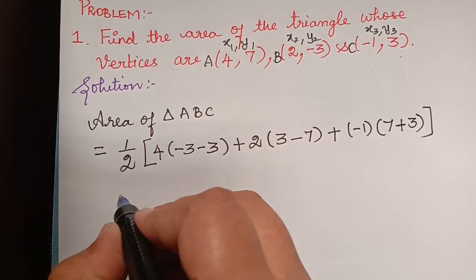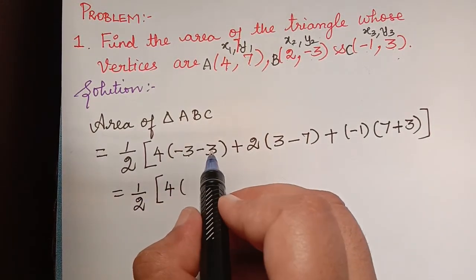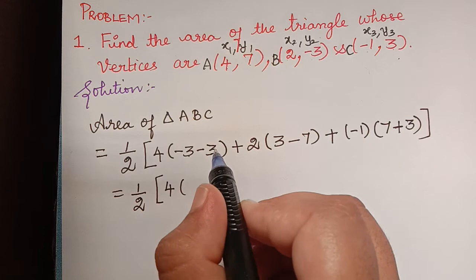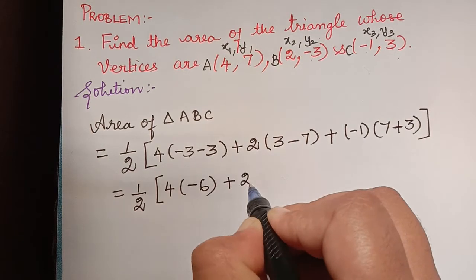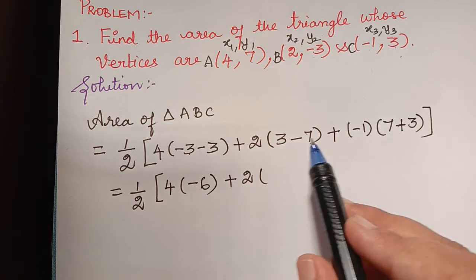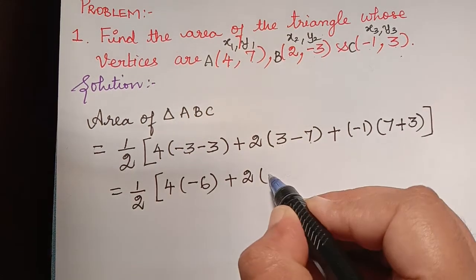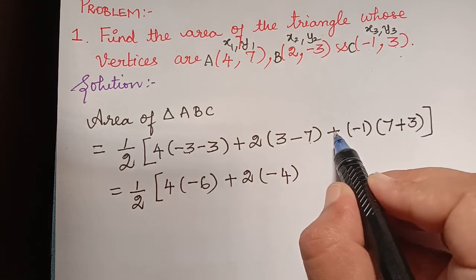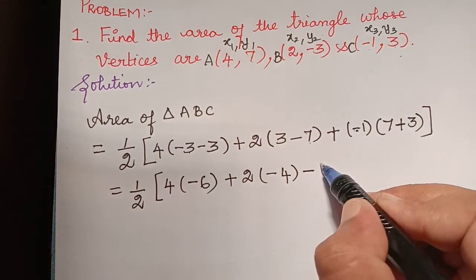Simplifying: this equals 1/2 multiplied with 4 multiplied with (−3 minus 3), which is negative 6, plus 2 multiplied with (3 minus 7), which is minus 4. Then minus 1 multiplied with (7 plus 3), which is 10, and with the negative sign in front that becomes minus 10.